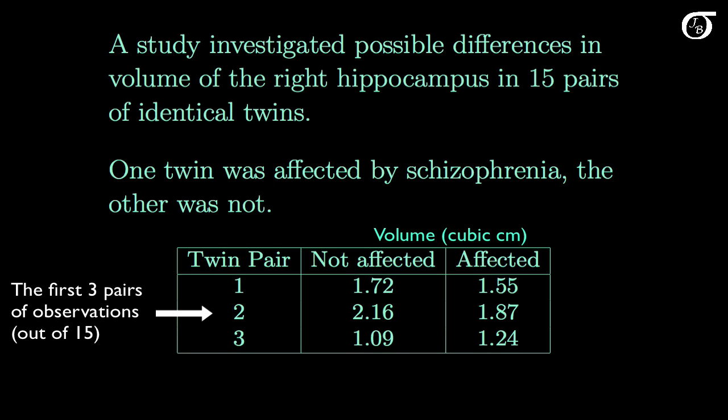It doesn't have to be two measurements on the same individual for it to be a dependent sample situation. Here's an example of a study investigating possible differences in the size of the right hippocampus, an area of the brain, in 15 pairs of identical twins. One twin was affected by schizophrenia and the other was not.